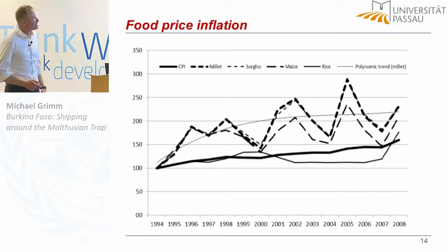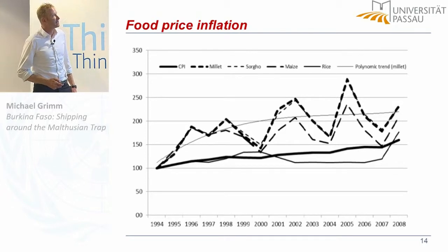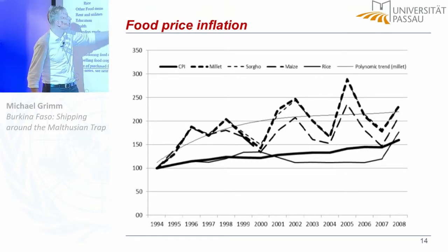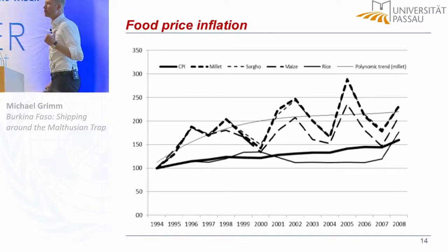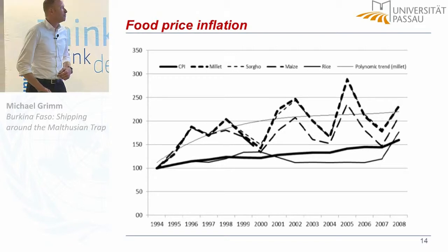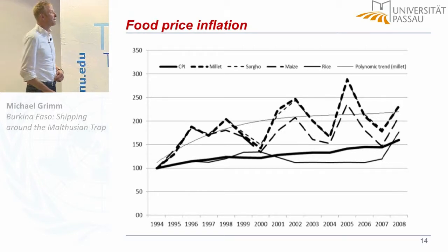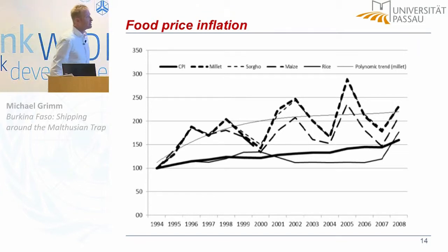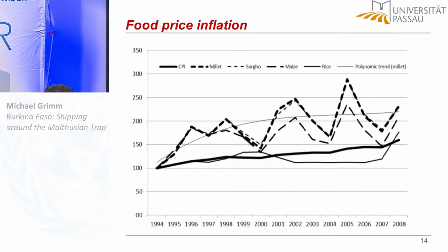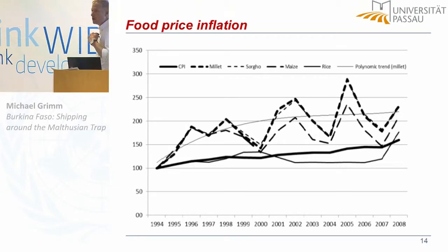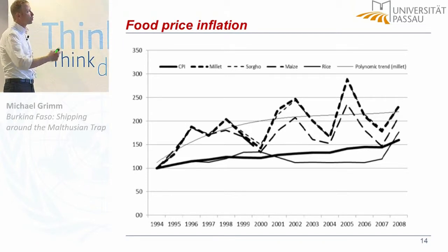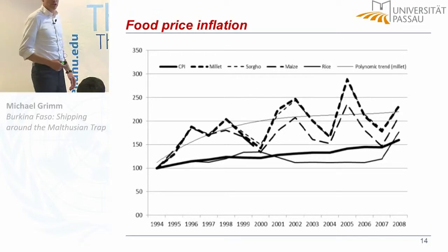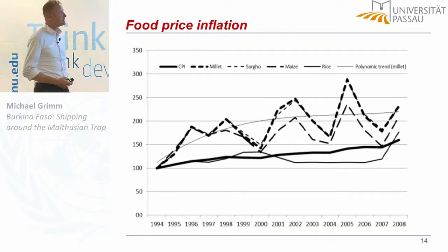Looking at budget shares for 1994, 1998, and 2003 — for all households in rural areas, the poorest quintile, and the richest quintile — the share of total expenditures spent on basic cereals (millet, sorghum, and maize) is continuously going up. It was particularly high in 1998 after the drought, but even in 2003 it remains much higher than in 1994. This documents the continuous erosion of purchasing power of the poor, which was increasing inequality since the rich were less affected by this differential inflation.